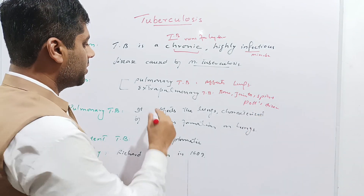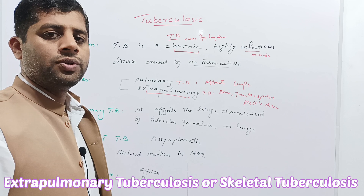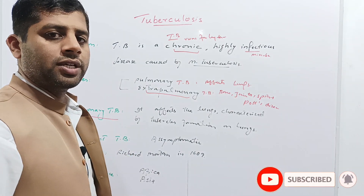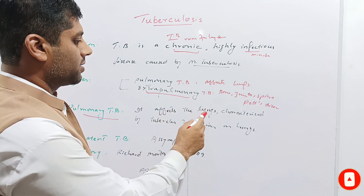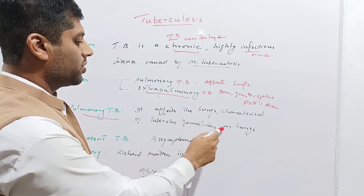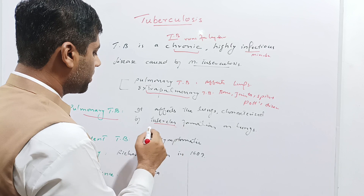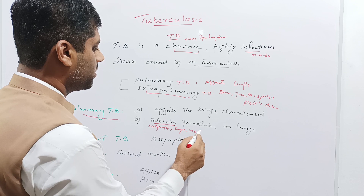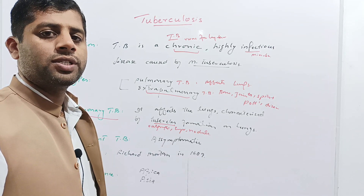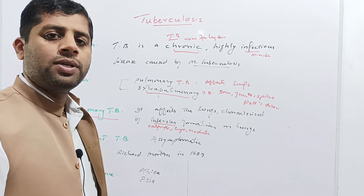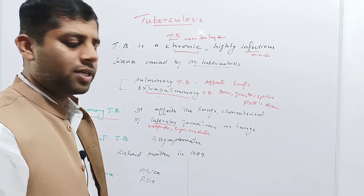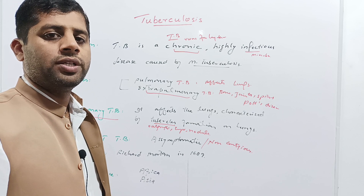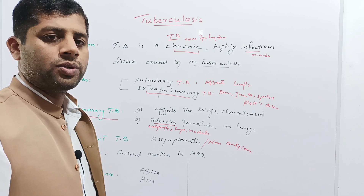You can completely understand extra-pulmonary tuberculosis in my previous lecture, but in today's lecture we will discuss pulmonary tuberculosis. Pulmonary tuberculosis affects the lungs and is characterized by tubercle formation — lumps or nodules on the lungs. Sometimes TB remains asymptomatic and non-contagious, meaning it cannot be transmitted to another person; this form is called latent tuberculosis.